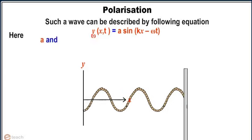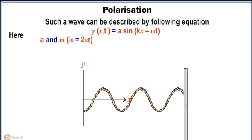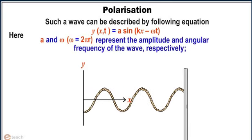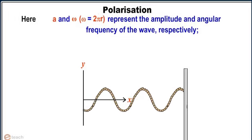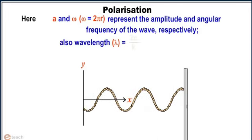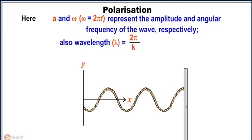Here, a and omega, where omega is equal to 2 pi r, represents the amplitude and angular frequency of the wave respectively. Also, wavelength lambda equals 2 pi divided by k.